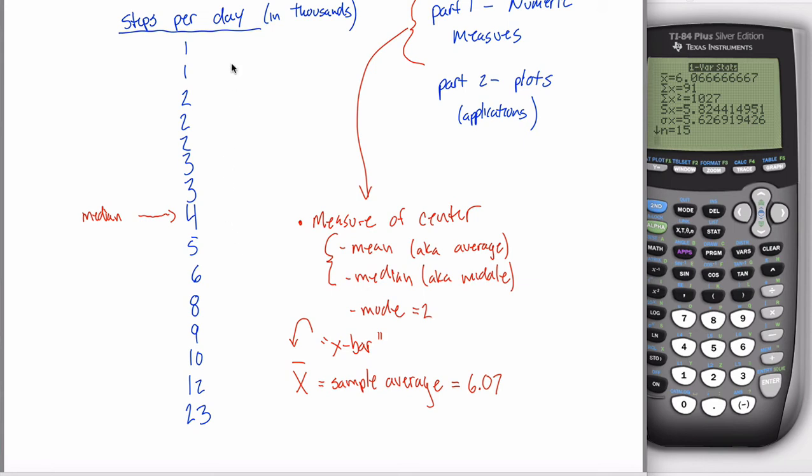The mean in this example is this 6.07. A couple other things I want to hit on quickly. This is a Greek letter sigma. It's a capital sigma. Sigma X just means if you added up all these observations, you would have gotten 91. You can check that if you want. Why do I care about that? That is sometimes referred to as a checksum.